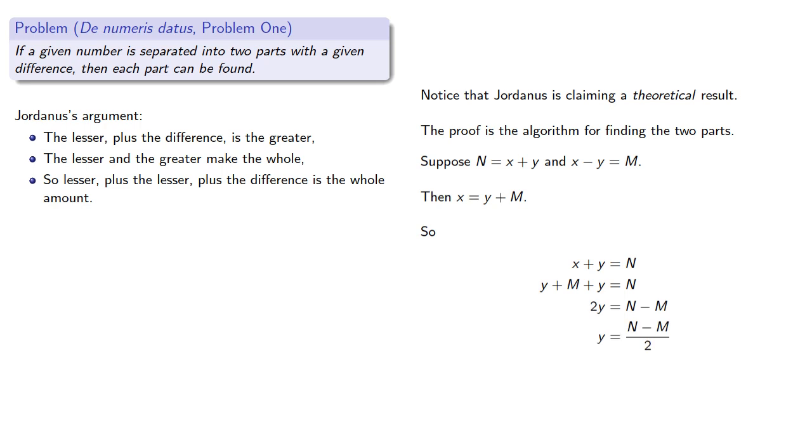Then the rest of the problem is finding one of these numbers. So Jordanus gives the algorithm: if you subtract the difference from the whole, you get twice the smaller number, take half to find the lesser number, and add the difference to find the greater.